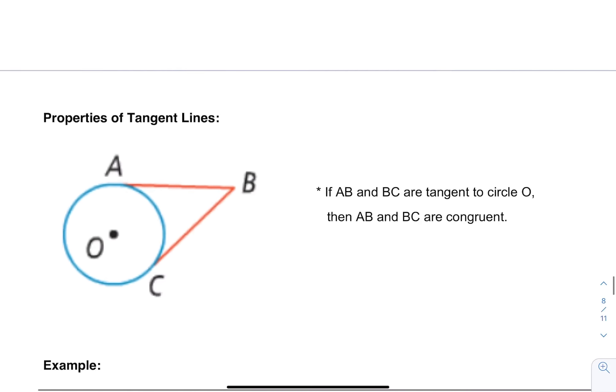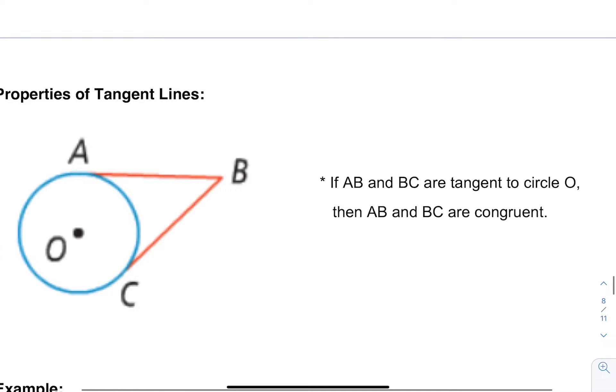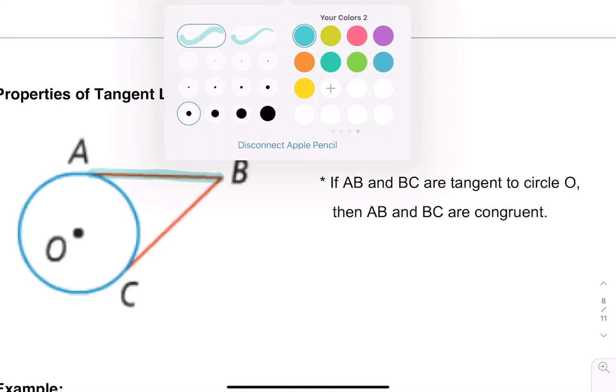This is a really cool property about tangent lines. If AB and BC are tangent to this circle O, and see how they intersect at that point B? Then we know that they're congruent. AB is congruent to BC. Any time we see these two segments that are tangent and connect with each other, they're actually the same length, which is a pretty cool thing to be able to say.